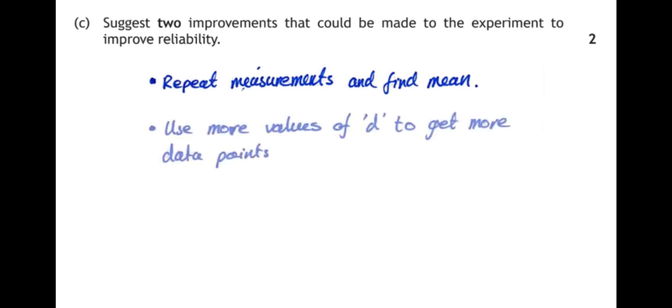Suggest two improvements that could be made to the experiment to improve reliability. Well, a useful thing to do in any experiment is to repeat your measurements and find a mean. That reduces the random uncertainty and improves the reliability of the experiment. We could use more values of d to get more data points. They've only done four different diffraction gratings with different values of d. If they did 5 or 6 or 7 or 8, they would have more lines plotted on their graph, and therefore they'd be able to draw a more reliable line of best fit.